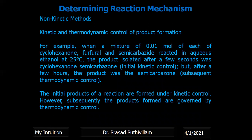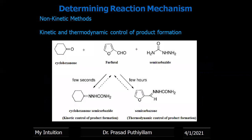Next, kinetic and thermodynamic controlled product formation. Taking an example of a mixture of 0.01 mol of cyclohexanone, furfuraldehyde, and semicarbazide: a cyclohexanone reacts with furfuraldehyde in the presence of semicarbazide. In the initial stages, within a few seconds, the product obtained is cyclohexanone semicarbazone, but after a few hours the product changes. Initially the reaction is kinetically controlled, and in the later stages it is thermodynamically controlled.